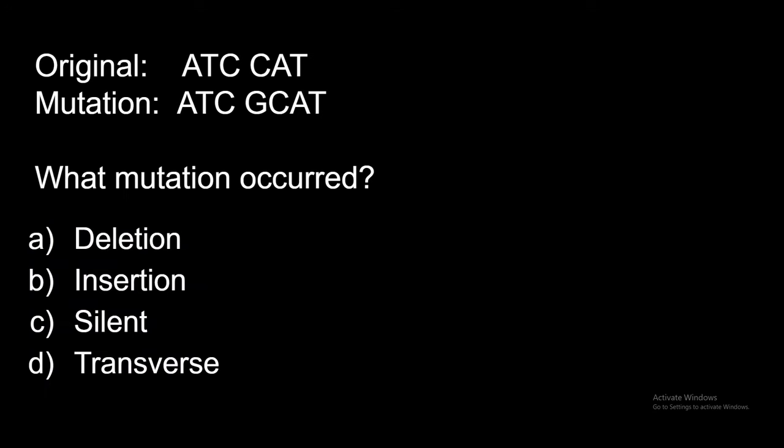Okay. So the original is A-T-C-C-A-T. And then the mutation causes it to go to A-T-C-G-C-A-T. So what mutation has occurred? You can pause the video now. All right. So we see that in the second codon, it went from C-A-T to G-C-A-T. So you have inserted a nucleotide. This is an insertion B. Very good job.